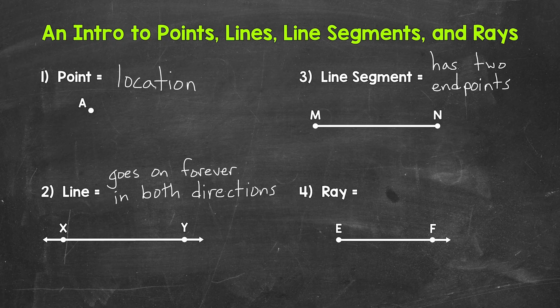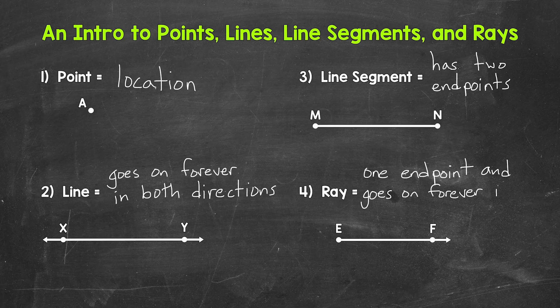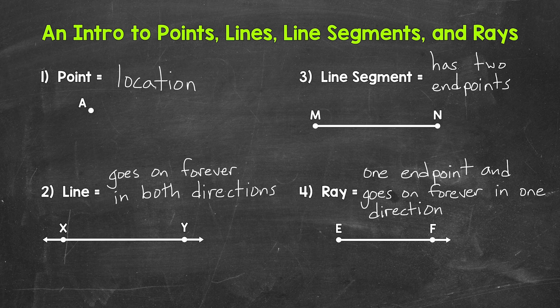Lastly, we have rays. A ray has an endpoint and then goes on forever in one direction — it extends infinitely in one direction. I always like to think of a ray like a ray of sunshine. The sun is the endpoint and then the ray goes from there. So let's put 'one endpoint and goes on forever in one direction' for our notes. For our example, we have ray EF. The endpoint is E and then that ray goes on forever in one direction through point F. We will go through how to name these in another section.